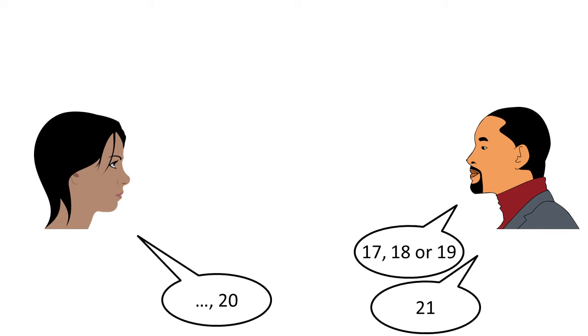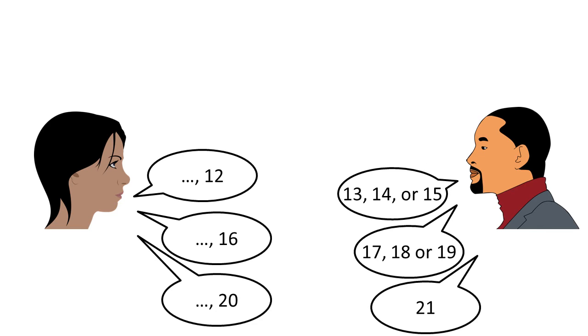Well, to make player two say seventeen, eighteen, or nineteen, we must have ended with sixteen. To have got that, player two must have ended their last go with thirteen, fourteen, or fifteen. Hence, we must have finished with a twelve on our previous go. We can see a bit of a pattern happening now.